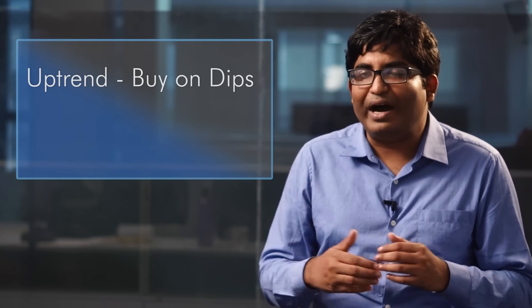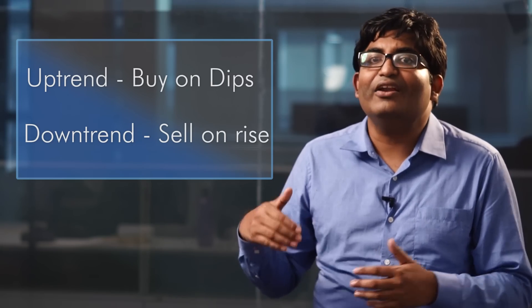So, this is an example where in a uptrend, we buy on dips and in a downtrend, we sell on rise. This is the ideal swing trading example with the help of RSI 45-55 band.